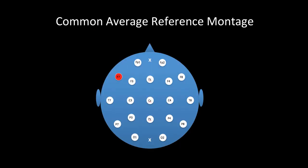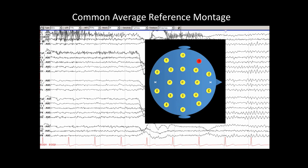Another common type of montage is called a common average reference montage. Here, in a single channel, rather than looking at the difference between two adjacent electrodes as in a bipolar montage, we look at the difference between an electrode of interest and an average of the signals from the rest of the head. The layout of an average reference montage is very similar, but we are comparing each channel to an average of the rest of the head. Relative strengths and weaknesses of different montages are reviewed in a separate video.